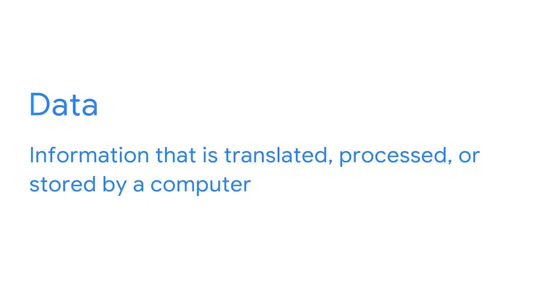Security teams classify assets based on value. Let's expand our security mindset and think about what exactly is valuable about an asset. These days, the answer is often information. Most information is in a digital form — we call this data. Data is information that is translated, processed, or stored by a computer.